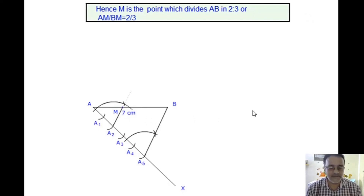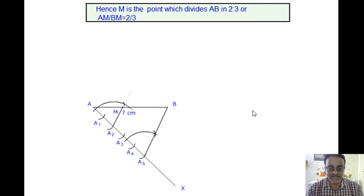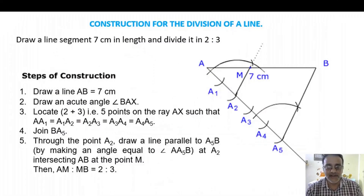Any doubt? Student asks: if ratio is 2 is to 3, we take up to A5; if it is 2 is to 4, take up to A6; if 3 is to 5, take up to A8. Whatever the sum of ratio is, make that many equal parts. If 3 is to 4, make 7 equal parts. Clear? Yes sir.